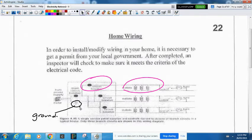There's a ground that looks like an upside-down Christmas tree. There's your circuit breaker to prevent too much electricity from flowing. You can see your three outlets all in parallel. That makes sense.